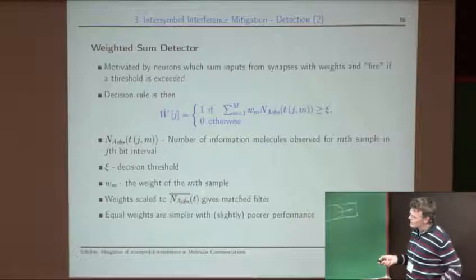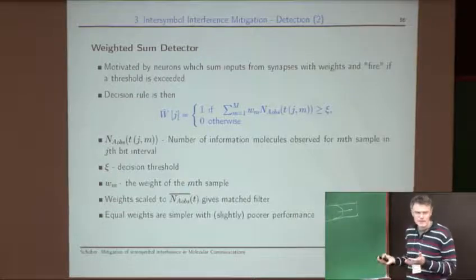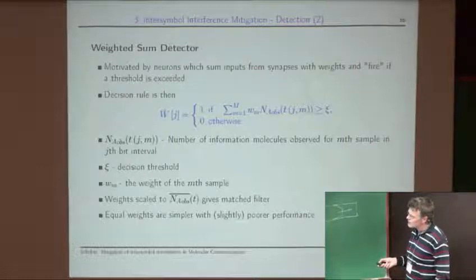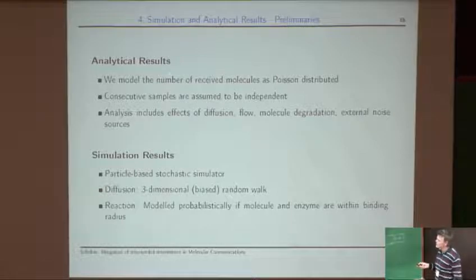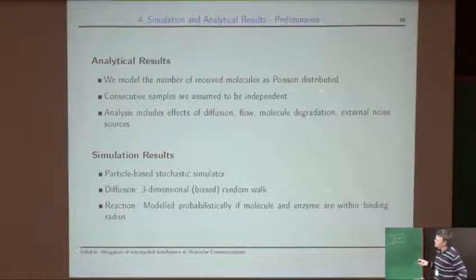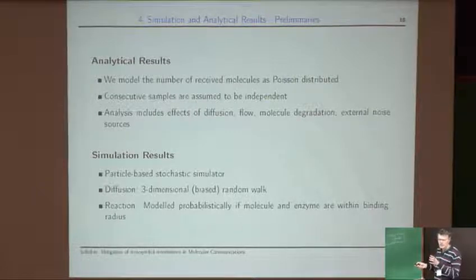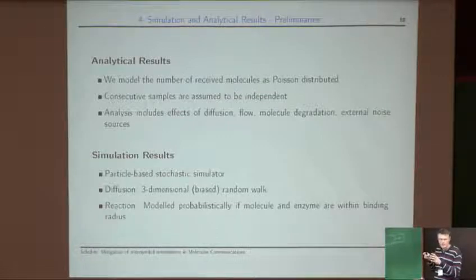For the weights, one option is to set them equal to the expected number of molecules, yielding something like a matched filter. A simpler option is equal weights for all samples. We have two types of results: analytical, assuming received molecules are Poisson distributed and consecutive samples are independent; and particle-based stochastic simulation, where diffusion is modeled as a 3D biased random walk and reactions are handled probabilistically.